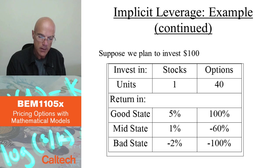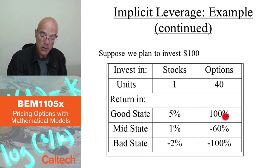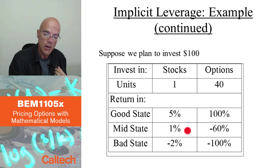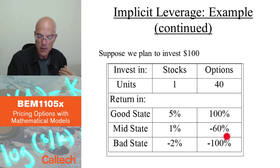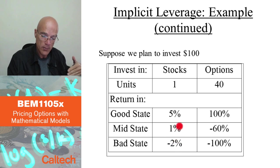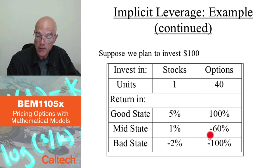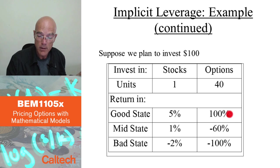This simple example shows that if you look at these numbers — 5%, 1%, and minus 2% for stock versus 100%, minus 60%, and minus 100% for options — trading options is much more volatile. You can make much higher profits but also much higher losses when trading with the same $100 investment. This is why people say that options provide traders with implicit leverage — it's as if you borrowed extra money to trade in more shares of the stock.